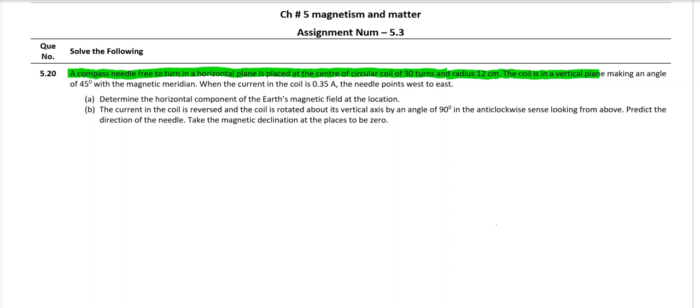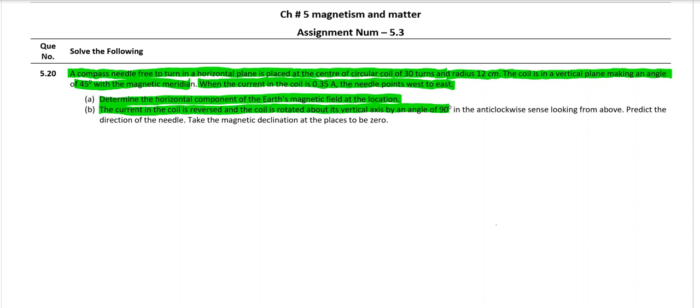The coil is in a vertical plane making an angle of 45 degrees with the magnetic meridian. When the current in the coil is 0.35 ampere, the needle points west to east. From this data we are supposed to determine the horizontal component of Earth's magnetic field at the location. The current in the coil is then reversed and the coil is rotated about its vertical axis by 90 degrees in an anti-clockwise sense looking from above. Predict the direction of the needle. Take the magnetic declination at the place to be zero.